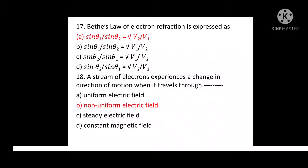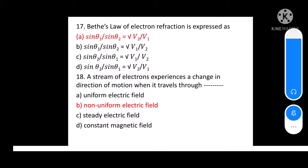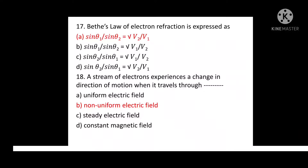Question No. 17: Beth's law of electron refraction is expressed as? Option A: Sin Theta 1 by Sin Theta 2 equals to root V2 by V1. Option B: Sin Theta 1 by Sin Theta 2 equals to root V1 by V2. Option C: Sin Theta 2 by Sin Theta 1 equals to root V1 by V2. Option D: Sin Theta 2 by Sin Theta 1 equals to root V2 by V1. Correct answer is Option A: Sin Theta 1 by Sin Theta 2 equals to root V2 by V1.